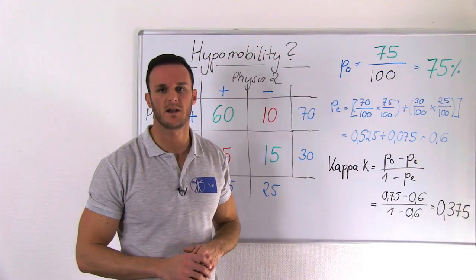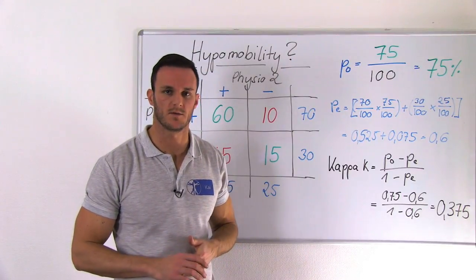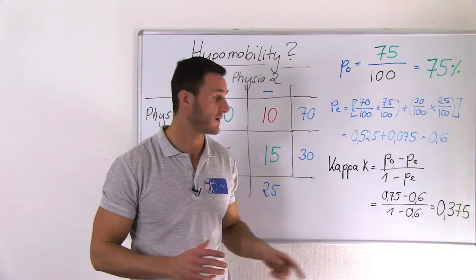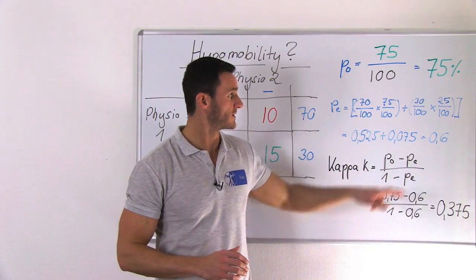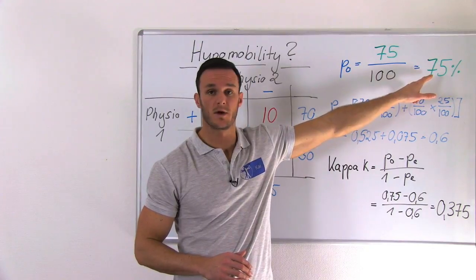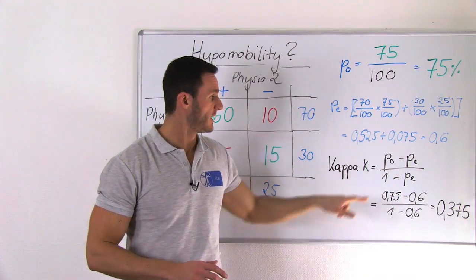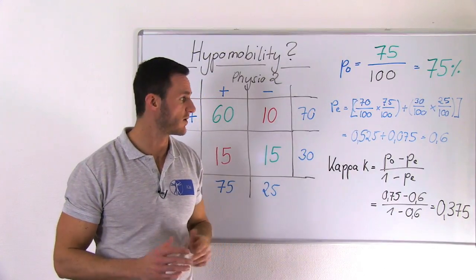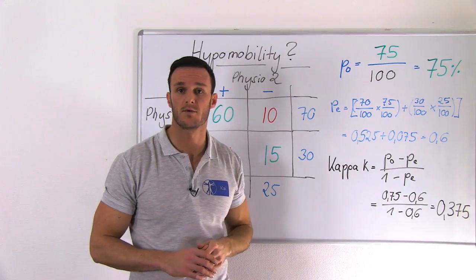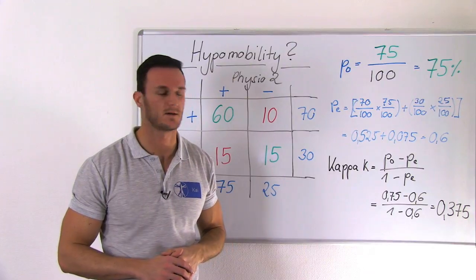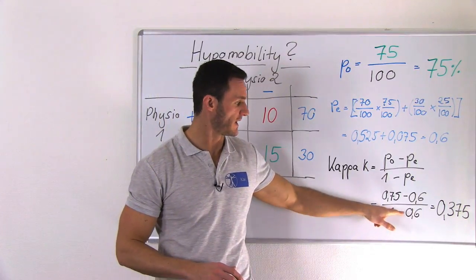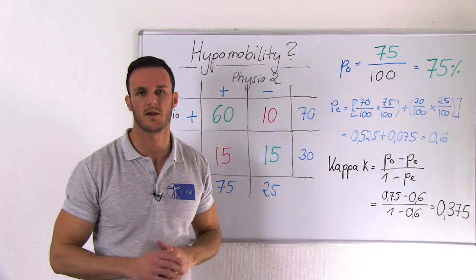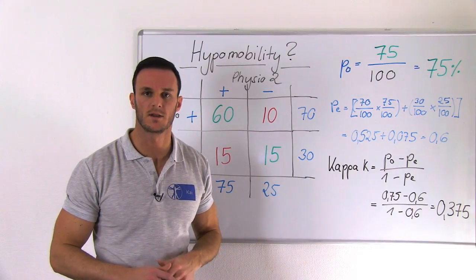Now let's finally calculate our Kappa value. What you do is take your actual outcome, PO — so in our case that's 0.75 — and you subtract the expected outcome of 0.6, and you divide it by 1 minus the expected outcome, so 1 minus 0.6. Then you end up with a Kappa value of 0.375.